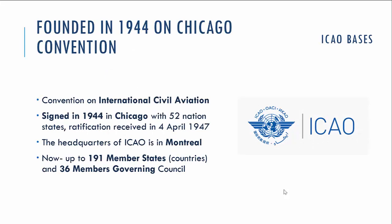ICAO stands for the International Civil Aviation Organization. It was founded in 1944 when the convention was held in Chicago with 52 nation states, and this convention was ratified in April 1947. The date of foundation is December 7th, 1944. The headquarters were decided to be in Montreal, and the organization now has 191 member states, with 36 of them being members of the governing council.